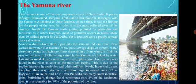Along a stretch, the Yamuna is heavily polluted by large industrial units — 22 in Haryana, 42 in Delhi, and 17 in Uttar Pradesh — along with many small industrial units. Surprisingly, though Delhi constitutes only 2% of the catchment area, it is responsible for 80% of the pollution of the river.